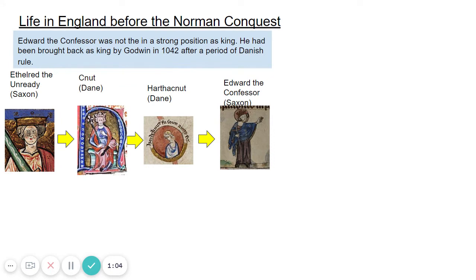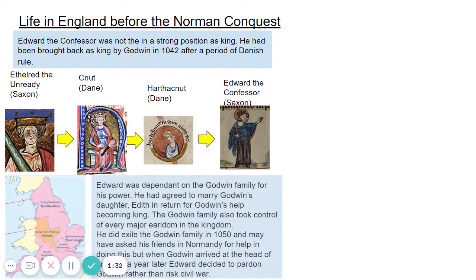Canute takes control of the kingdom. Æthelred the Unready is killed and his son, who will become Edward the Confessor, flees — runs away into exile in Normandy. Canute establishes himself as a successful king and is even able to pass the throne onto his son, Harthacanut. It's only when Harthacanut dies in 1042 that Edward the Confessor has an opportunity to return. He couldn't have done this without the help of Earl Godwin, and Godwin is going to become a key part of the start of Edward's story.